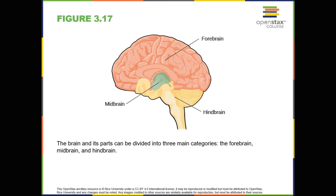The cerebral cortex, which is the outer surface of the brain, is associated with higher-level processes such as consciousness, thought, emotion, reasoning, language, and memory. Each cerebral hemisphere can be divided into four lobes, each associated with different structures or different functions.